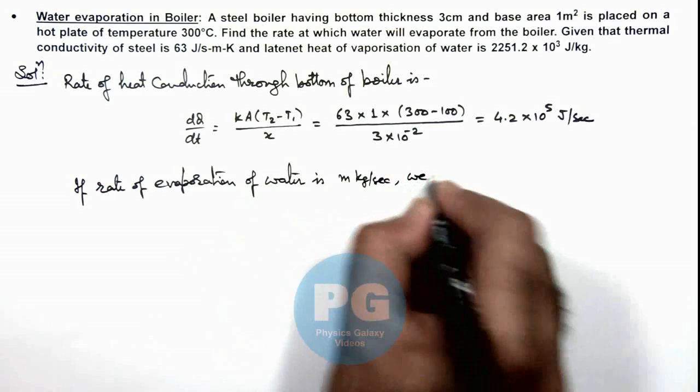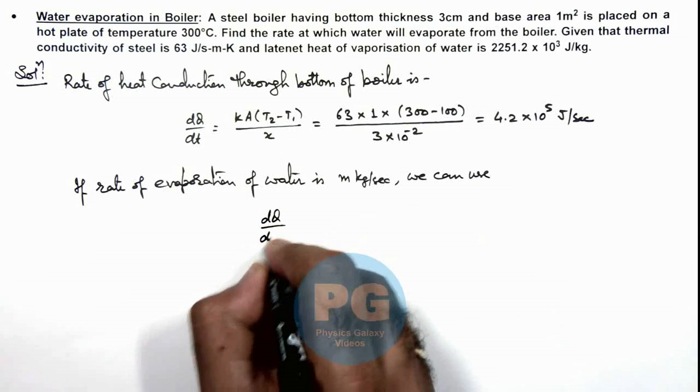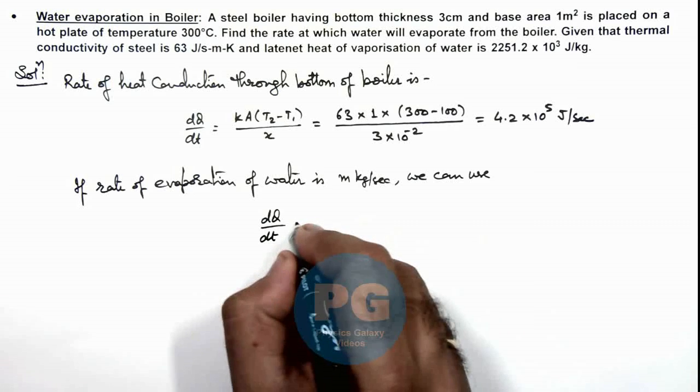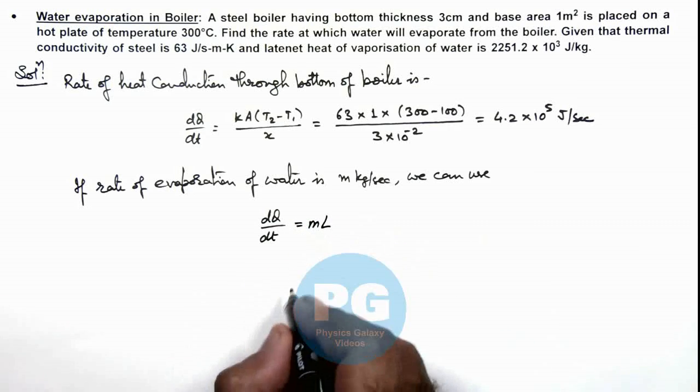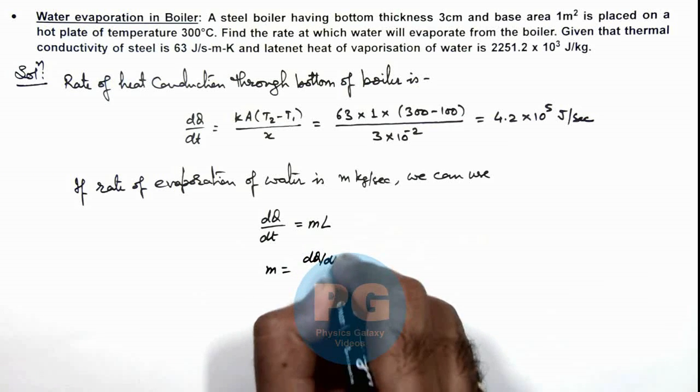Here we can use this dQ by dt, the rate at which heat is being supplied must be equal to mL. So this gives us the value of m which is dQ by dt upon L.